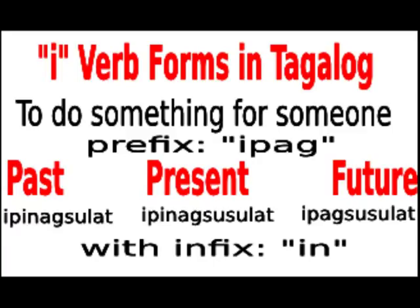Forming E-verb forms. For verb roots beginning with consonants, the prefix E, or its variant ipag, is attached to all forms and tenses. The infix in is attached to past and present tenses.